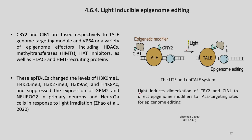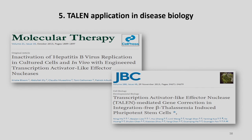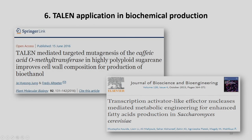You can see in this figure that light induces the dimerization of CRY2 and CIB1 to direct epigenome modifiers to TAL targeting sites for epigenome editing. TALEN has been widely used in many applications in disease biology — for example, inactivation of hepatitis B virus replication in cultured cells, which has potential to be translated into therapies. Also, TALEN-mediated gene correction in integration-free beta-thalassemia induced pluripotent stem cells, and for applications in biochemical production, such as TALEN-mediated targeted mutagenesis of caffeic acid O-methyltransferases in highly polyploid sugarcane to improve cell wall composition for production of bioethanol.